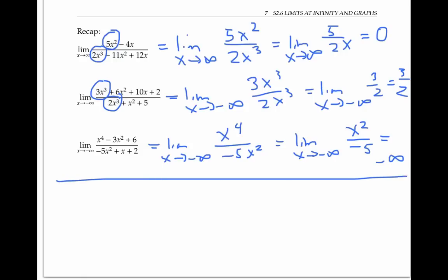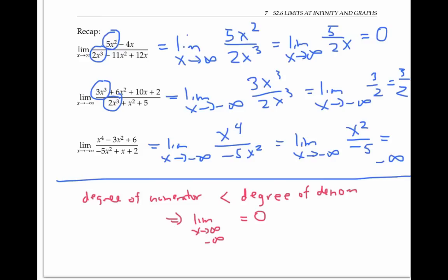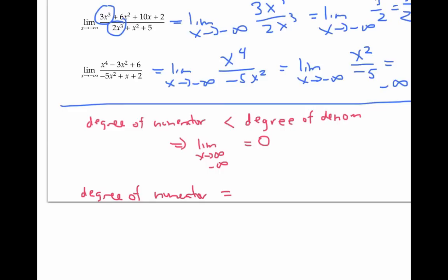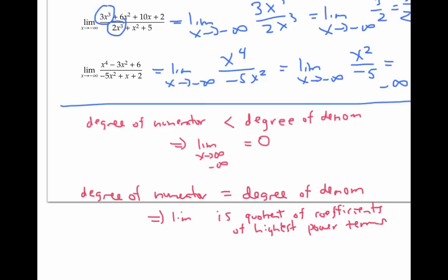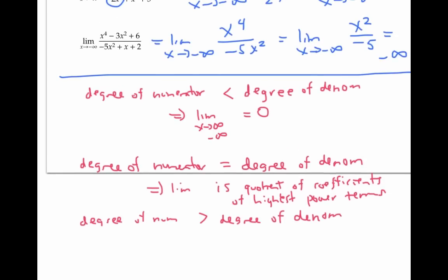In general, for rational functions, looking at the highest power terms gives you a reliable shortcut for calculating limits at infinity. If the degree of the numerator is less than the degree of the denominator, then the limit as x goes to infinity or negative infinity is zero. If the degrees are equal, the limit is the quotient of the leading coefficients. And if the degree of the numerator is greater than the degree of the denominator, then the limit is plus or minus infinity. These shortcut rules are handy, but it's also important to understand the technique of factoring out highest power terms, which can be used in other situations as well.